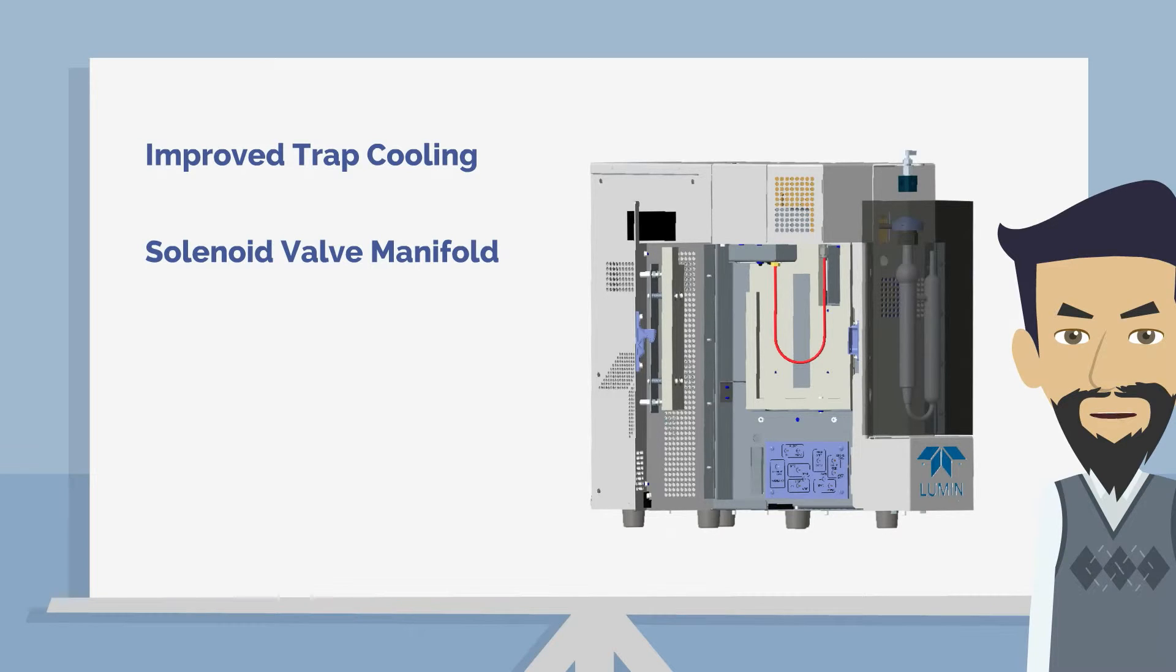Best of all, foam eliminator models now include an internal pressure regulator for the eliminator system on the manifold, meaning the system comes fully plumbed and ready to run. The only gas connection needed is the main gas line of the Lumen, eliminating the time and complexity associated with setting up the foam elimination systems on older models.